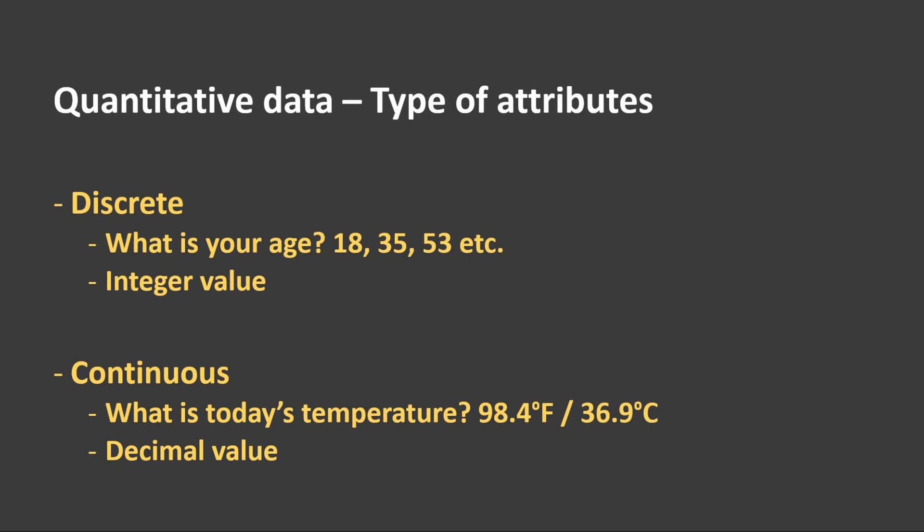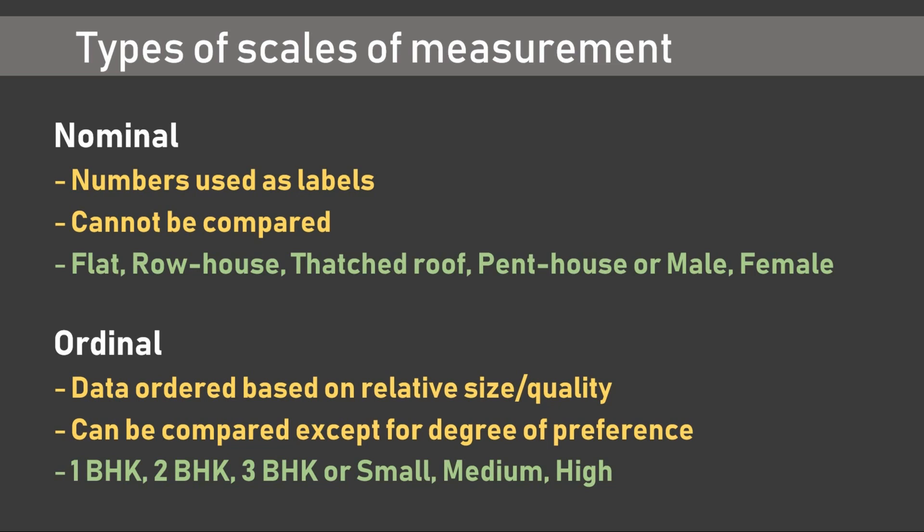When dealing with quantitative data, there are two types of attributes: discrete and continuous. Discrete is usually an integer value, while continuous is a decimal value. An example of a discrete attribute is age — age cannot be defined in a decimal value. An example of a continuous attribute would be temperature, which can be described in a decimal value. This brings us to the most important part of the discussion: what kind of scales do you use to measure such variables?